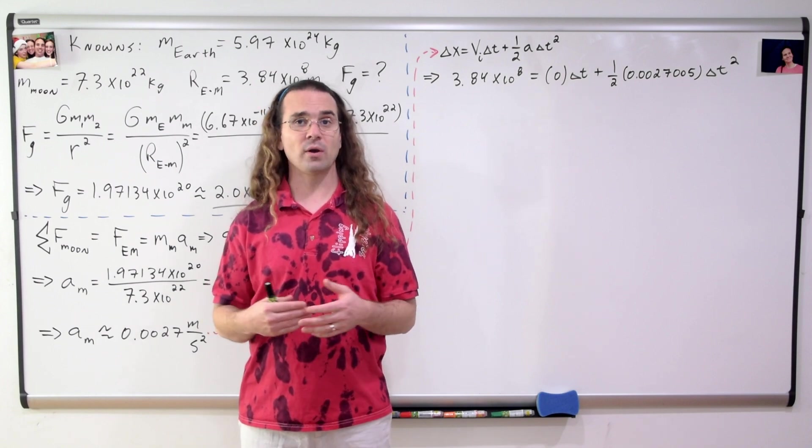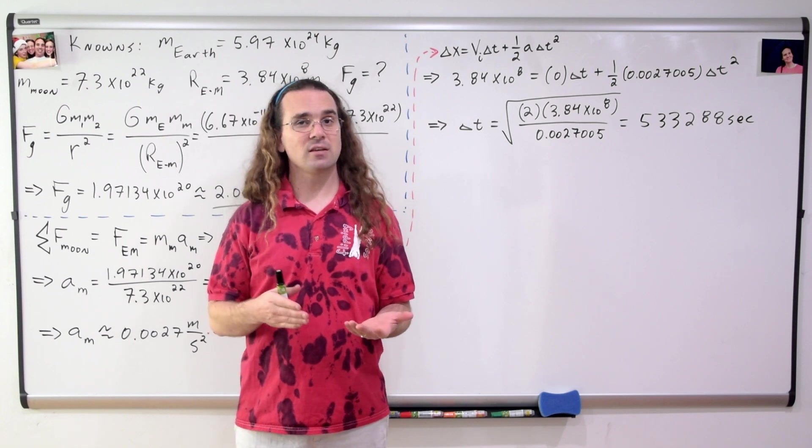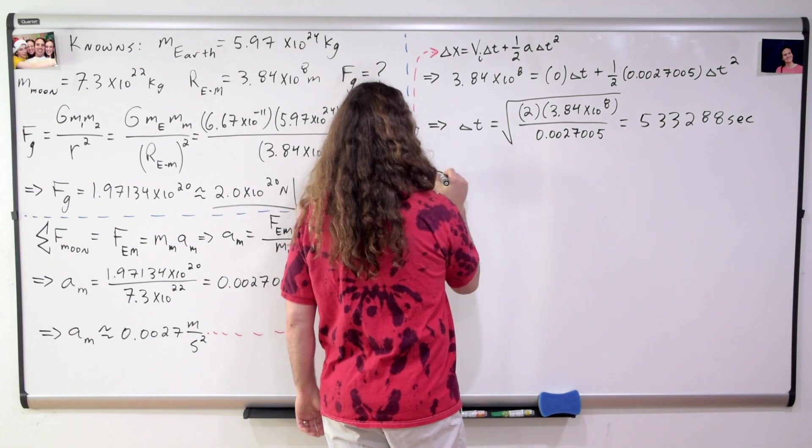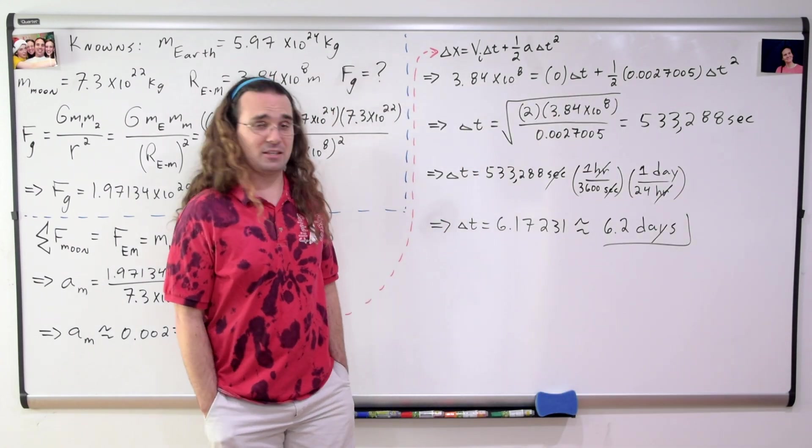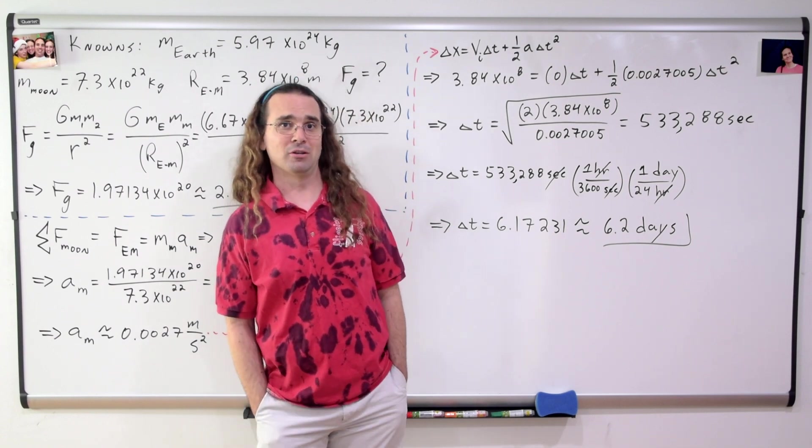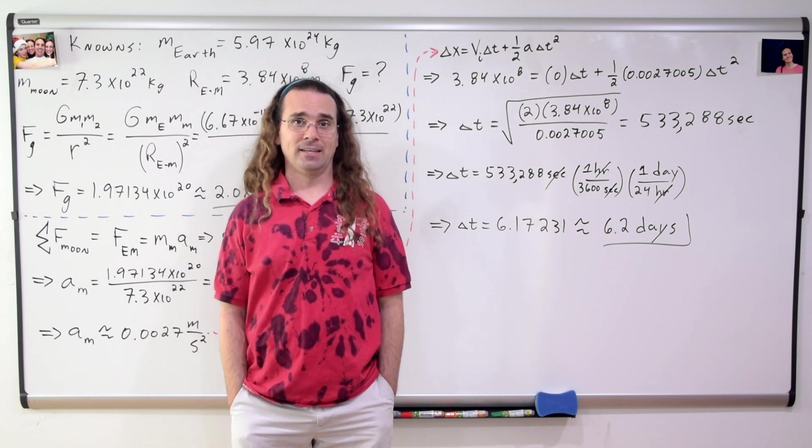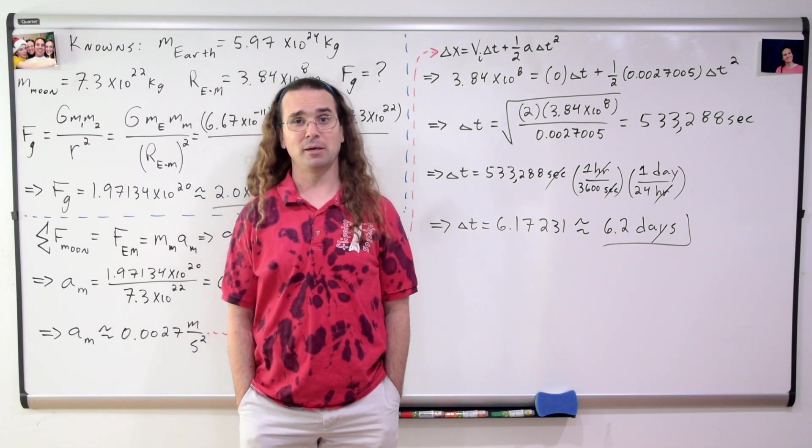We could plug in all the numbers and rearrange the equation to get the change in time in seconds. However, I think it would be much better expressed in days. So, roughly 6.2 days before the Moon slams into the Earth and pretty much everything on the planet goes extinct. Good luck everybody, I think I'm going to go spend my last 6 days with my family. Bye.